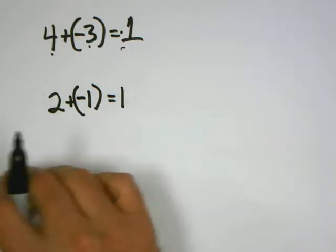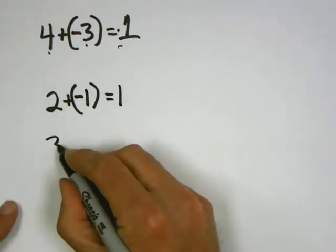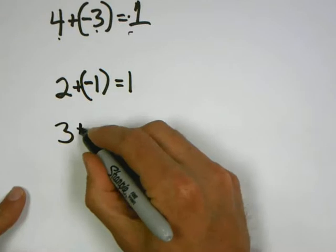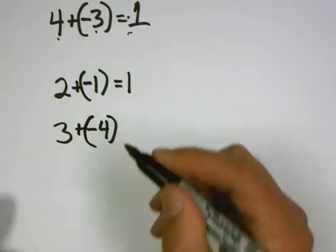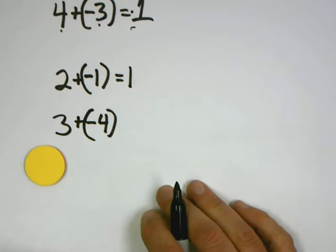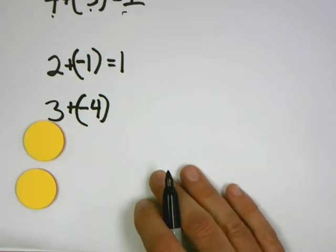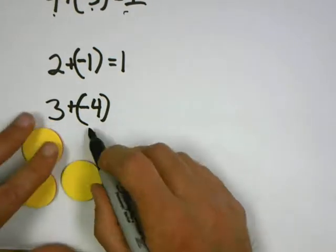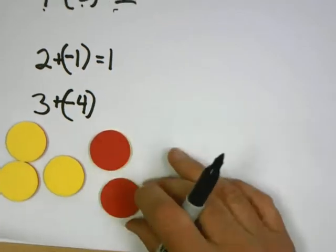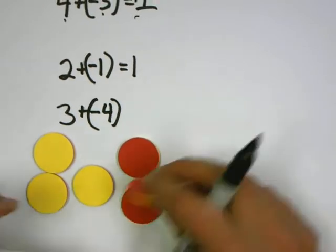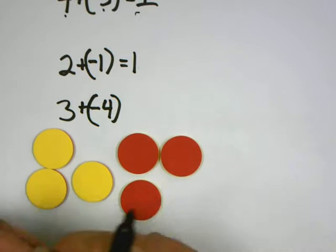Let's do another. So 3 + (-4). So I have three dollars. Uh-oh. But I get a bill for four.